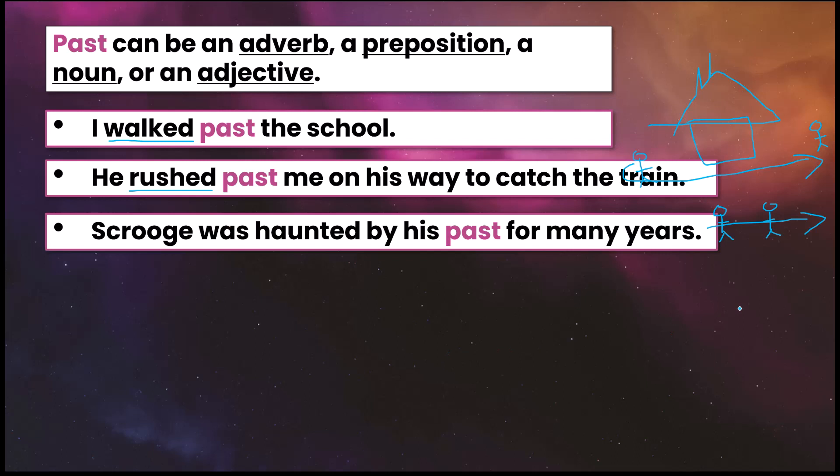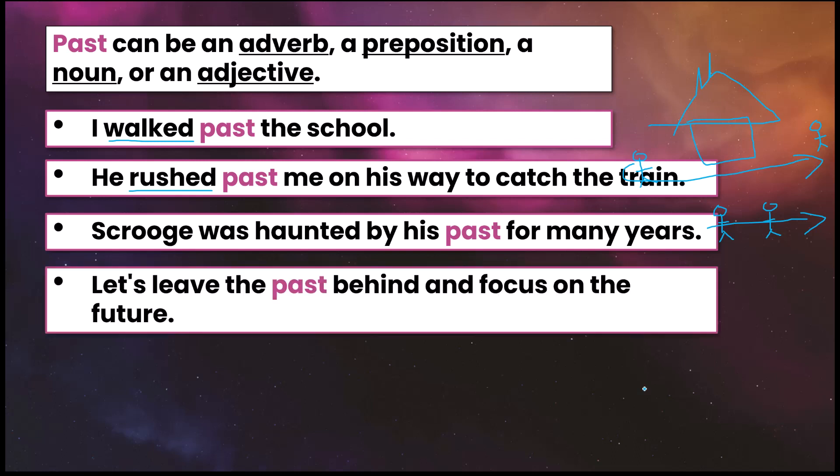Now let's look at past as a noun form. Scrooge was haunted by his past for many years. So past is essentially the opposite of future. Scrooge is haunted or bothered by things he did in the past many years ago. Another example with past as a noun: Let's leave the past behind and focus on the future.